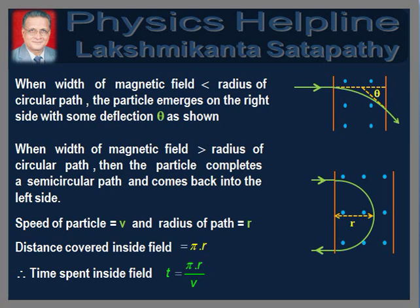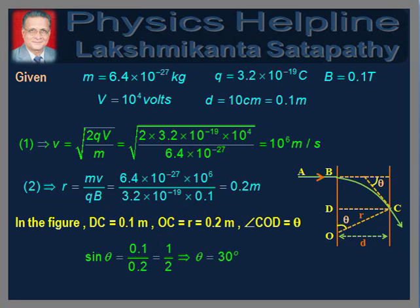Now we are in a position to solve the problem using these concepts. It is given that m = 6.4 × 10⁻²⁷ kg, q = 3.2 × 10⁻¹⁹ coulombs, and the accelerating voltage is 10⁴ volts. From equation 1, v = √(2qV/m). Putting the values and simplifying, we get v = 10⁶ meters per second. Equation 2 gives r = mv / (Bq). Putting the values and simplifying, we get r = 0.2 meters.